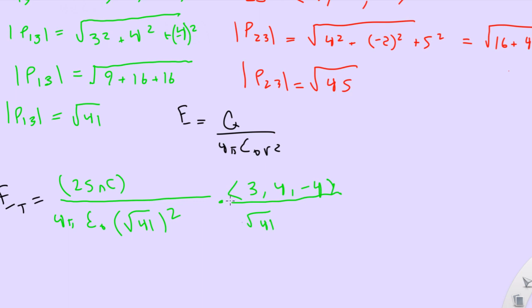And this would be plus 60 nanocoulombs over 4 pi epsilon naught square root of 45 squared times 4, negative 2, 5 over square root of 45.